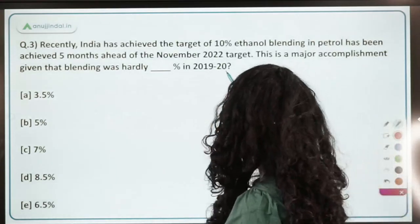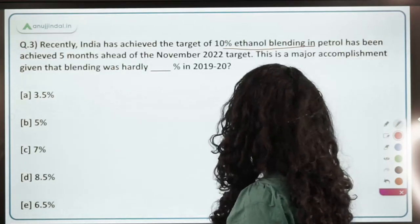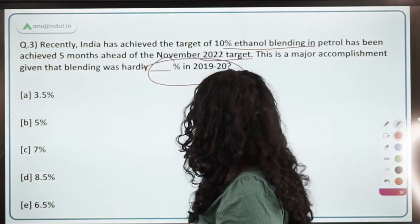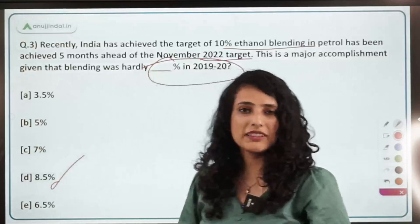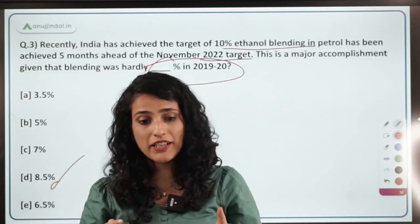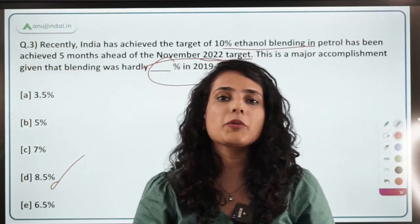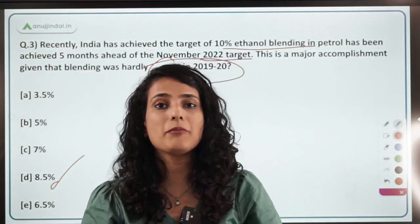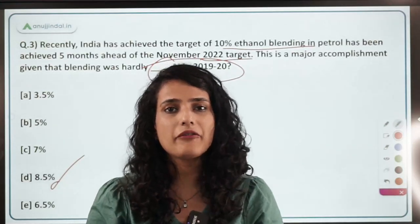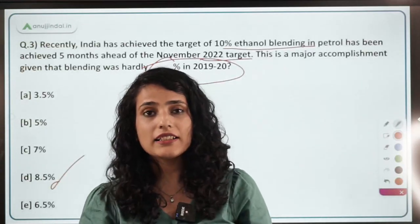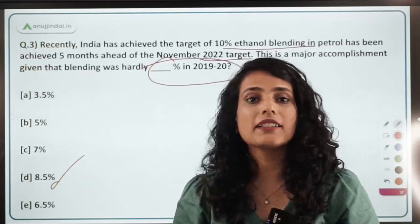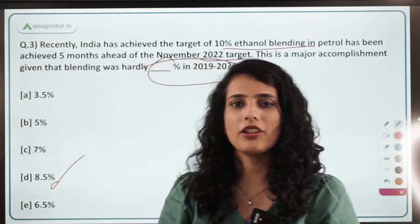India has achieved the target of 10% ethanol blending in petroleum, five months ahead of its November 2022 target. This is a major accomplishment — blending was only about 1.5% in 2013-14 and 5% in 2019-20. The E10 program has been implemented and the next phase will be the E20 program. Ethanol is obtained from biofuels. Ethanol blending is expected to save India significantly on crude oil imports. Methanol is even more cost-efficient than ethanol in terms of availability.